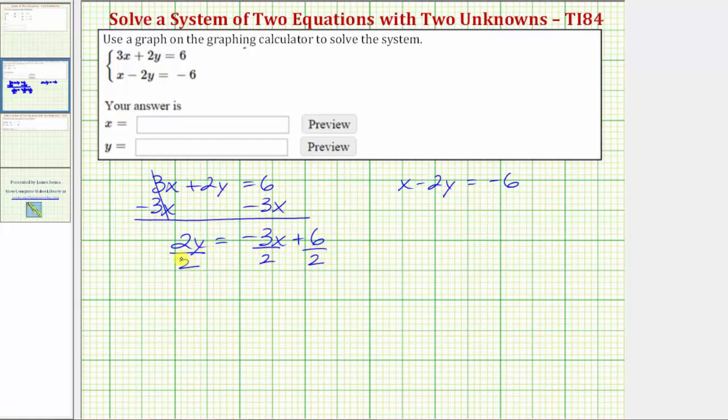So simplifying, dividing by 2 undoes multiplying by 2, so left side simplifies to y. On the right side, we have -3/2 x plus 6 divided by 2 is 3.